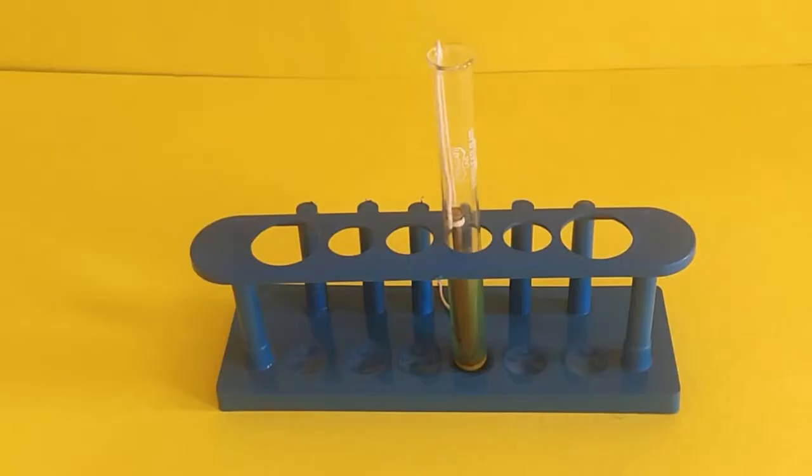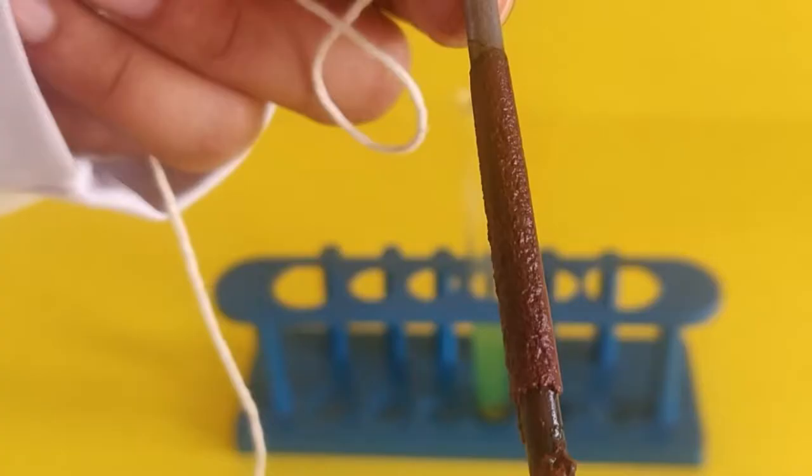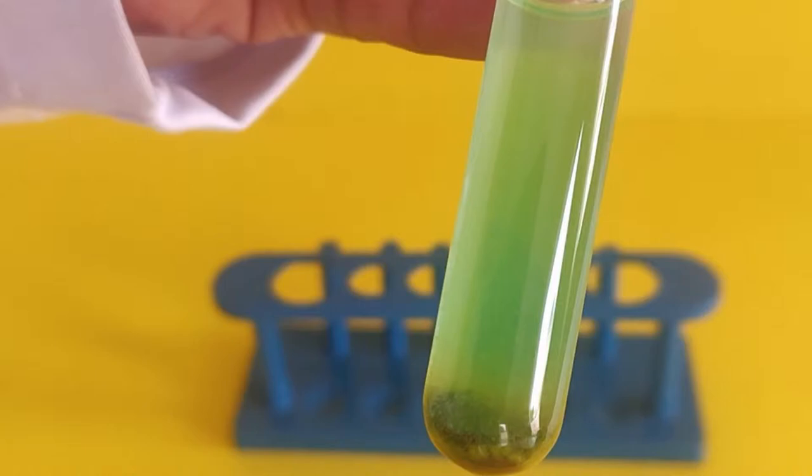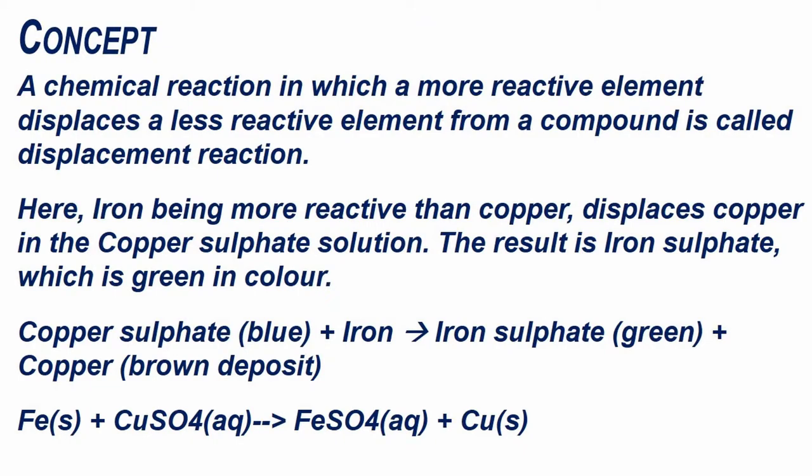Keep the nail in the test tube for a few hours. You will notice a thicker buildup of copper on the nail. The contents of the test tube have turned green in color and there are brown sediments of displaced copper at the bottom of the test tube.